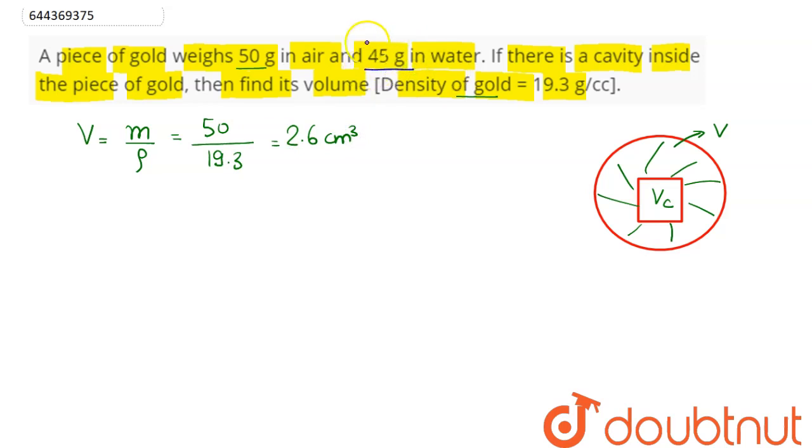Now when this is taken in water, the apparent weight comes to be 45 grams. Apparent weight means mg minus buoyancy force. So mg is the true weight minus buoyancy comes out to be apparent weight, which is equal to 45 grams. So mg, the true weight, is 50 g.